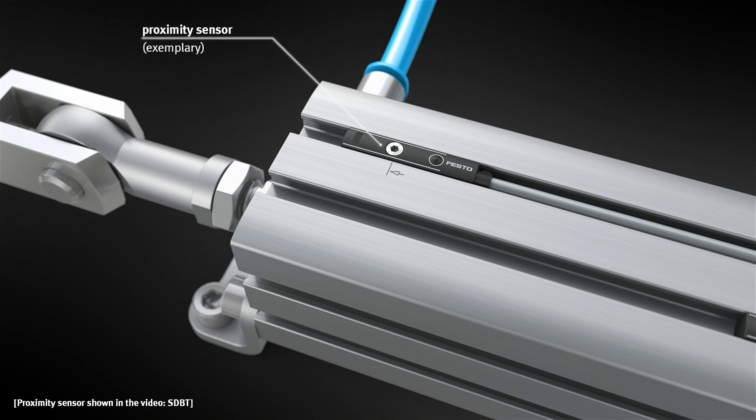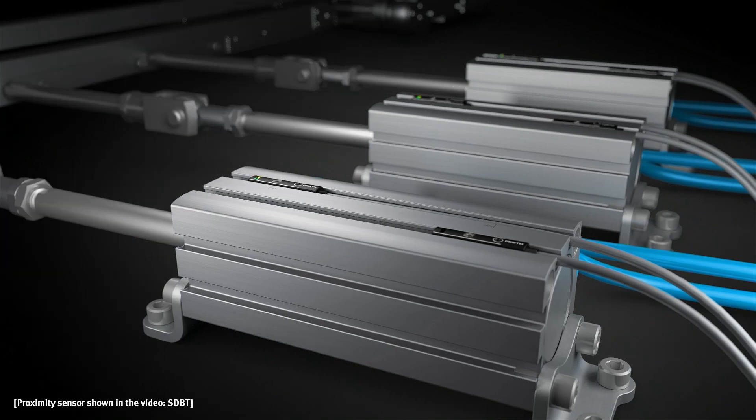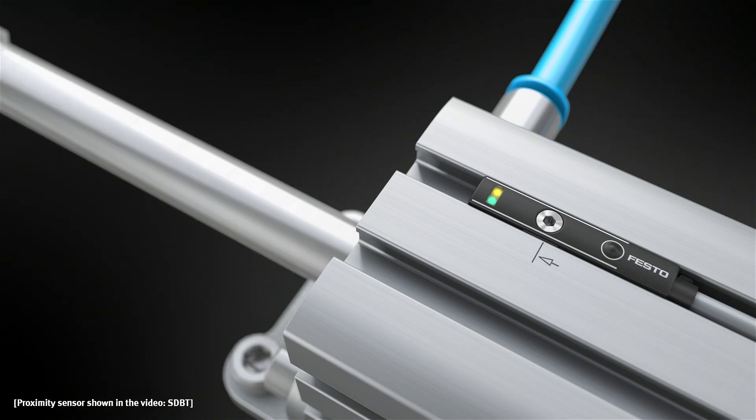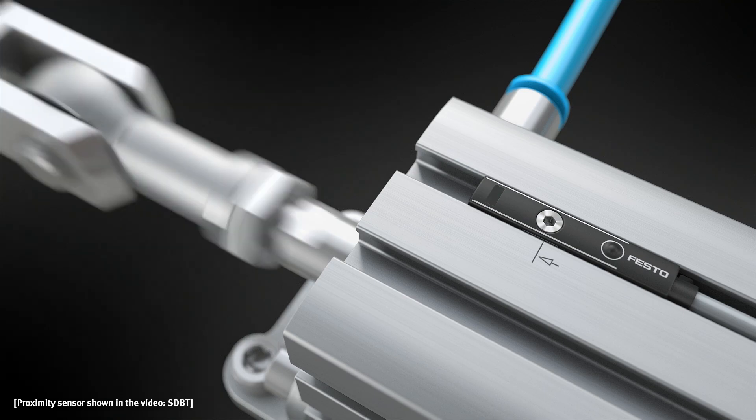Proximity sensors are sensors that react to approach. This takes place without direct contact. They monitor the position of the piston in a pneumatic cylinder, for example.